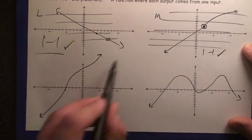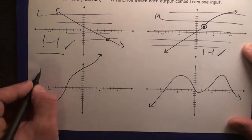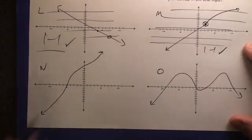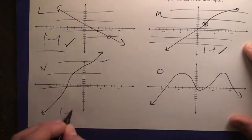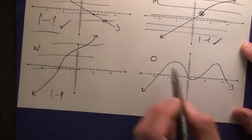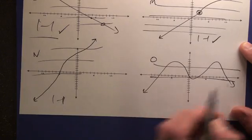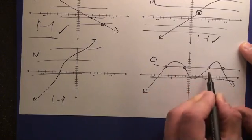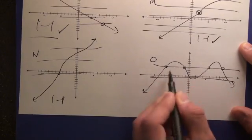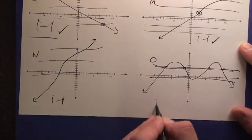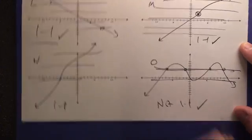Here's another function. Function lmn, and I guess we'll call this function o. So here, yes, one-to-one. It passes the horizontal line test. And function o, no, because you're getting four different inputs that give you the same output. So not one-to-one.